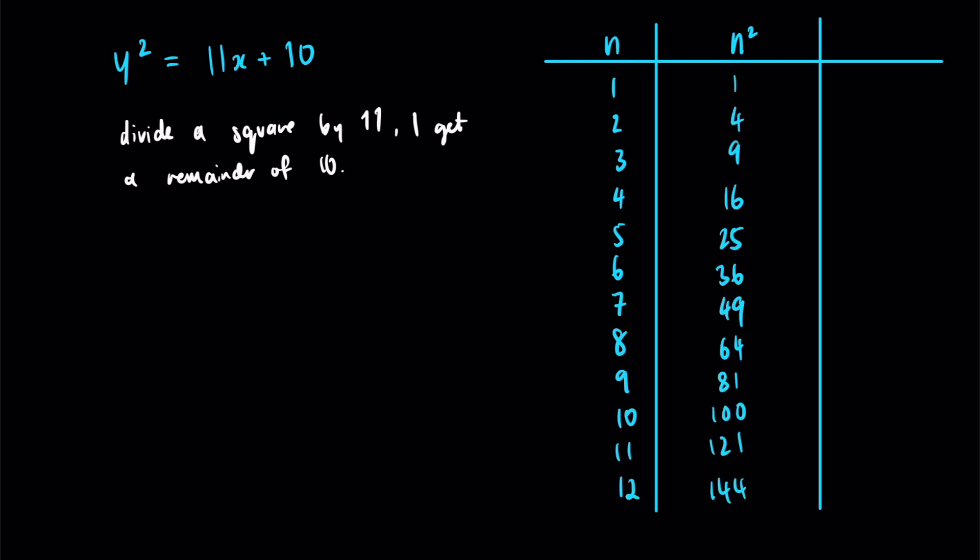And now I want to divide these square numbers by 11 and look at the remainder. So let's write in this column the remainder when we divide n² by 11.